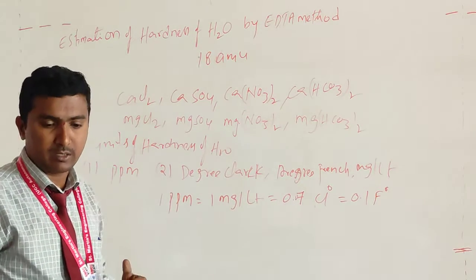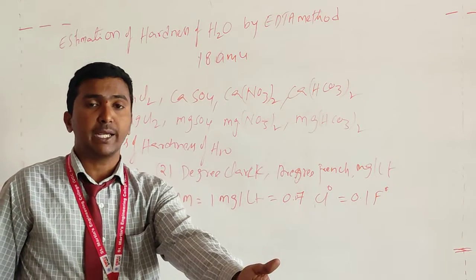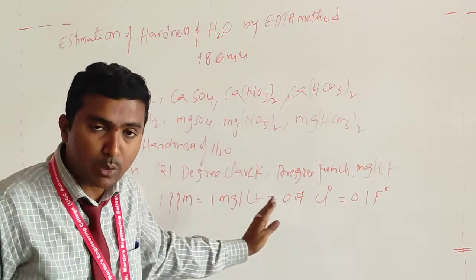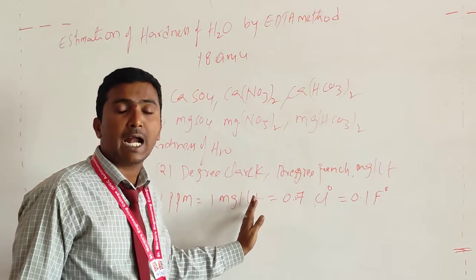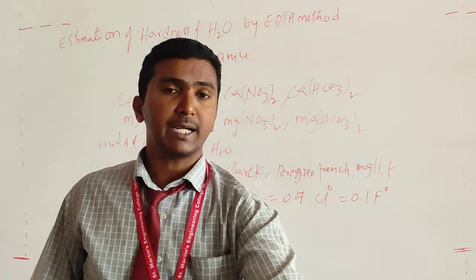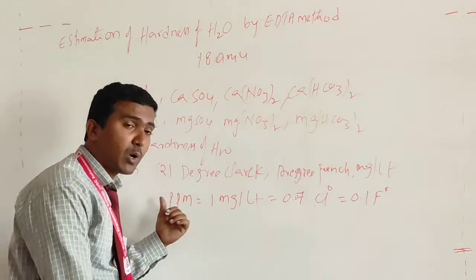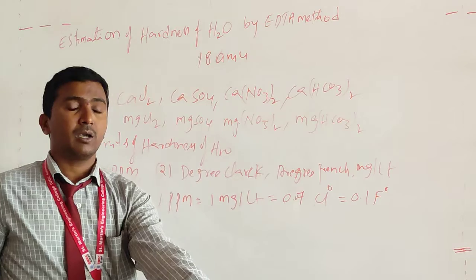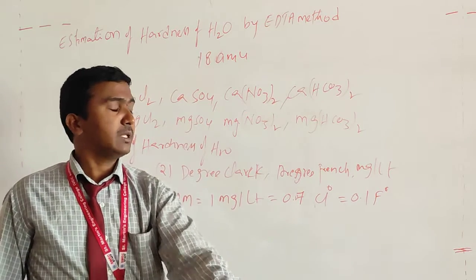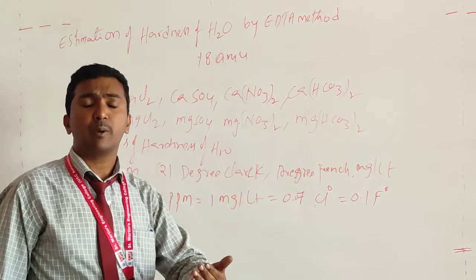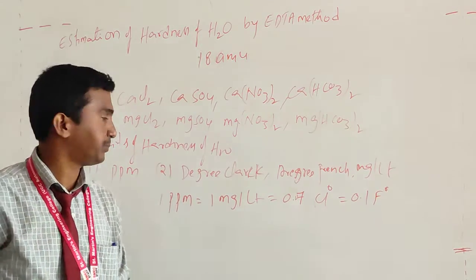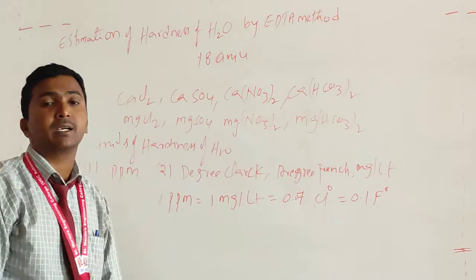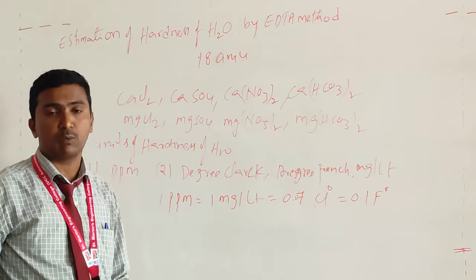Based on the removal of salt, there are two types of hardness of water: temporary hardness and permanent hardness. Temporary hardness means the water consists mainly of bicarbonates of calcium and magnesium. That is temporary hardness of water.